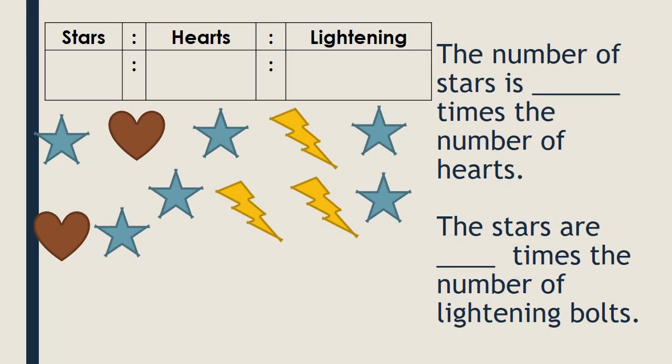Looking at the relationship between the stars, hearts, and lightning bolts — pause the video and have a go at writing the ratio of stars to hearts to lightning, and completing the sentences. We've got six stars, two hearts, and three lightning bolts. So in total we have 11 pictures. Our ratio is six to two to three.